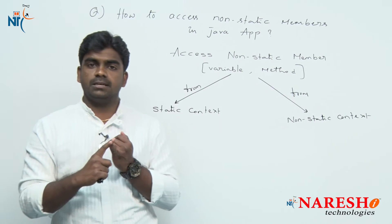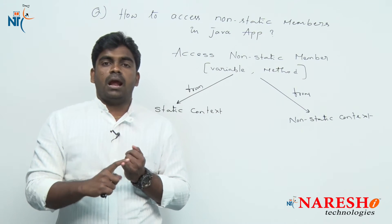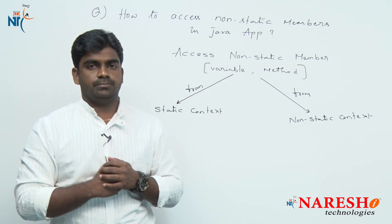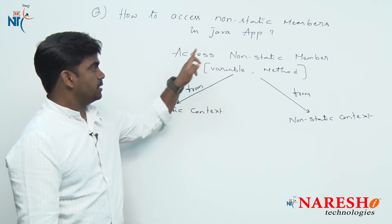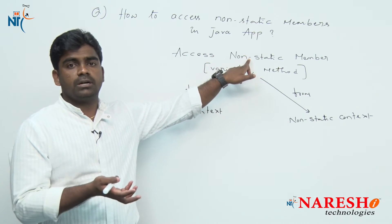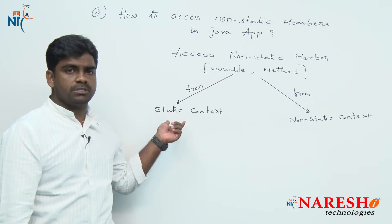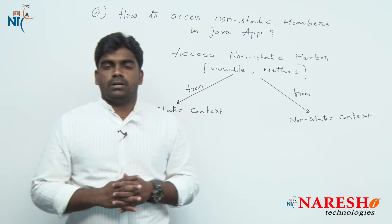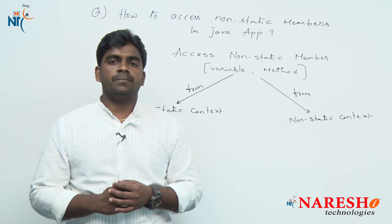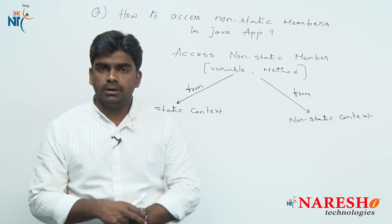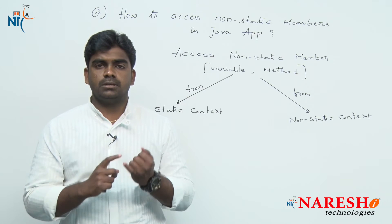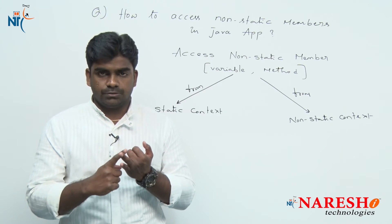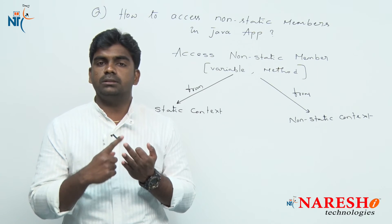What you are accessing is important, and from which context you are accessing is also important. You can be accessing a non-static member from either a static context or a non-static context. Generally, to access any member, we use three things: either by using a class name, or by using an object reference variable, or the 'this' keyword.